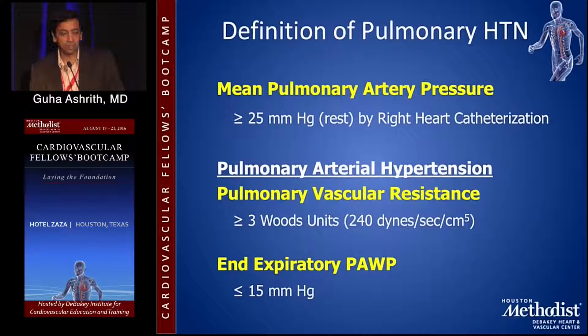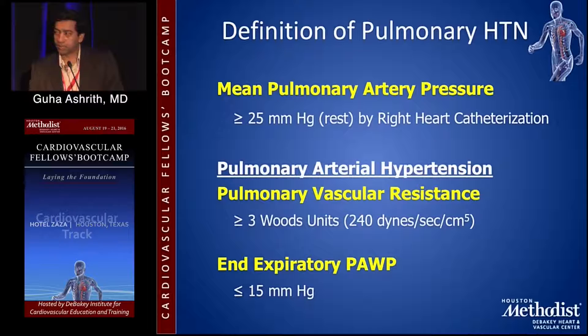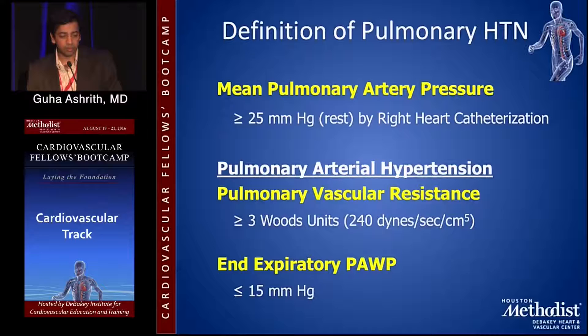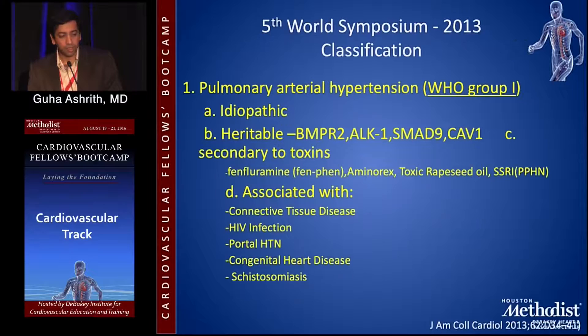We'll go through definitions of PH and PAH, the diagnostic algorithm, stratification, treatment algorithm, and recognition and management of acute RV failure. The definition of pulmonary hypertension is very simple — it's mean PA pressure greater than or equal to 25 millimeters of mercury, addressed by right heart catheterization. You need an invasive right heart catheterization to make a diagnosis, though echocardiogram can be suggestive. Pulmonary arterial hypertension is where your wedge pressure is less than 15 mmHg and your PVR is greater than 3 Wood units. Pulmonary vascular resistance is a calculated measure where you subtract the mean arterial pressure from the wedge pressure and divide by cardiac output.